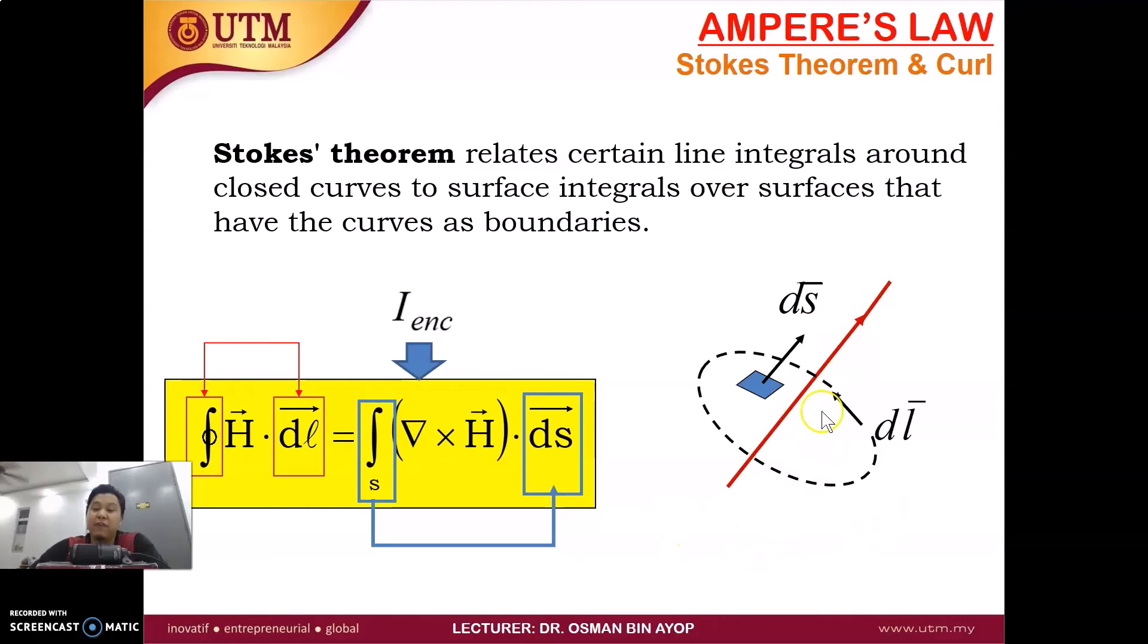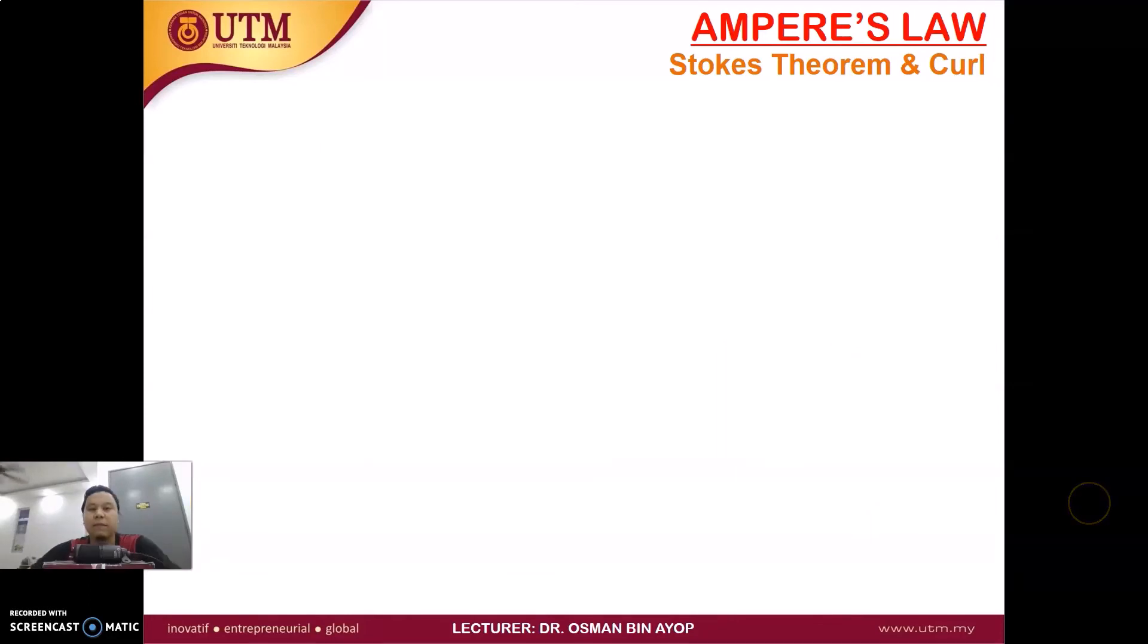When we have, for example, the current, the line current, and we solve the field using the line integrations, it's basically equal to the curl H. The curl H dot product is the surface here. So the curl H is equal to J. J indicates the current density.